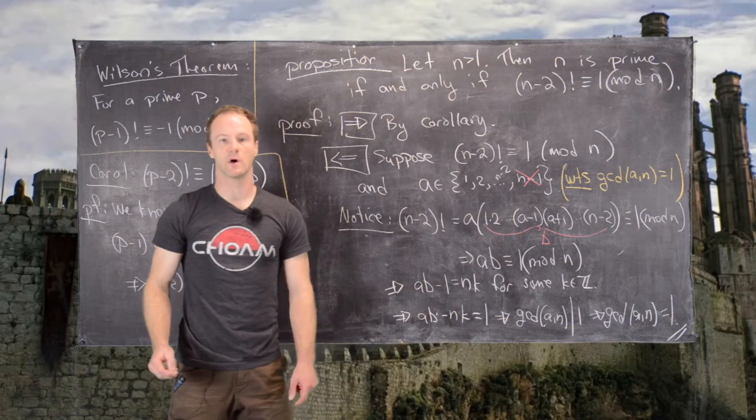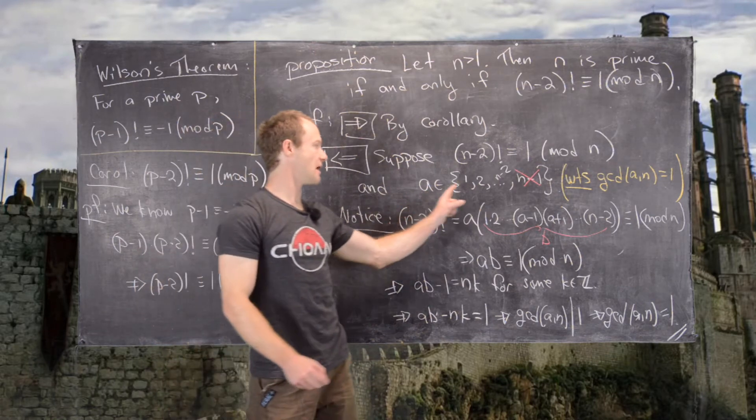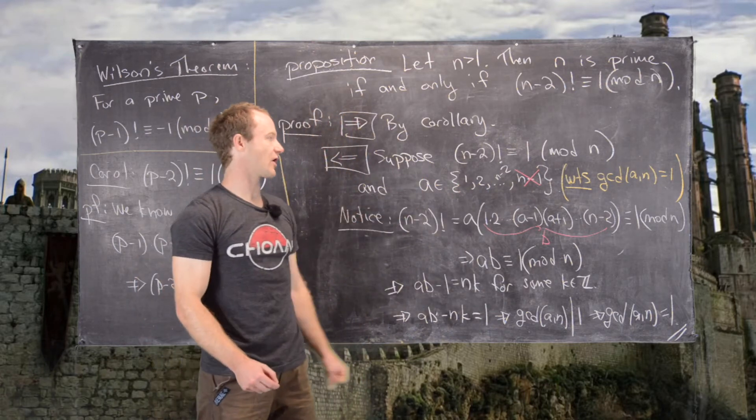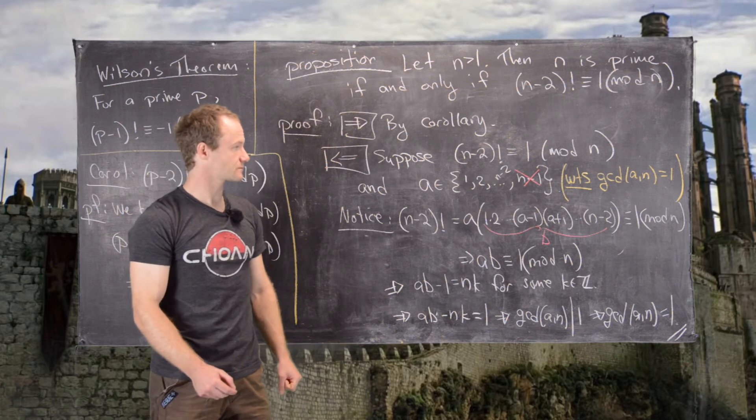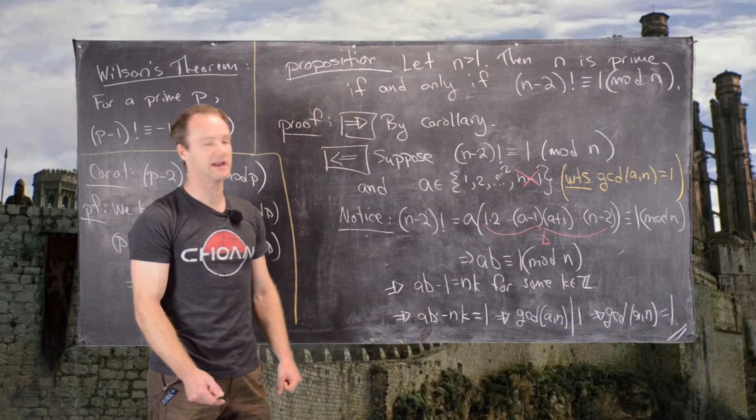This is exactly what we wanted to show. So let's summarize. We have that all numbers between 1 and n-1 are relatively prime to n. But that's exactly saying that n is a prime number.